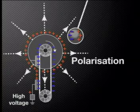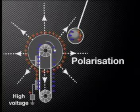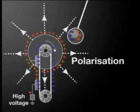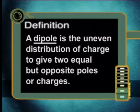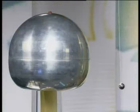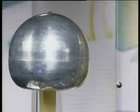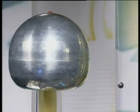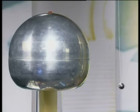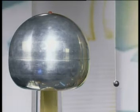This separation of charge on a neutral object is called polarization. As you can see, the two sides of the polystyrene ball now have opposite charges — they have formed what we call a dipole. A dipole is the uneven distribution of charge to give two equal but opposite poles or charges. The negatively charged pole of the ball is attracted to the large positive charge on the metal dome, and so the ball will move towards it. When the polystyrene ball is moved away from the van der Graaf generator and out of the electric field, the electrons on the ball become evenly distributed again and it behaves normally.